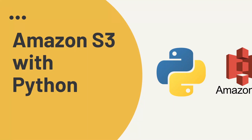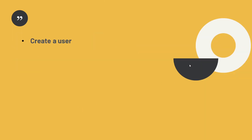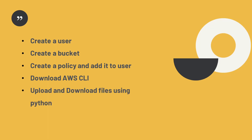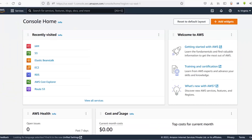Welcome back to this YouTube channel. Today in this video I'm going to show you how we can use Python to upload and download files from our S3 buckets. We'll first create a user on AWS, then create a bucket, create a policy and add it to the user. Then I'll download the AWS CLI to set up the user, and then we'll use Python to upload and download files to the S3 bucket.